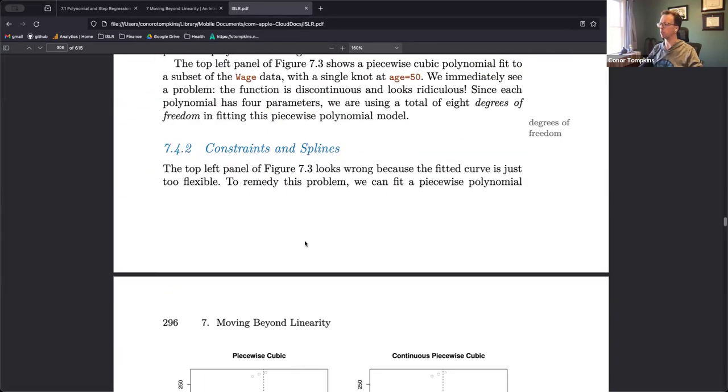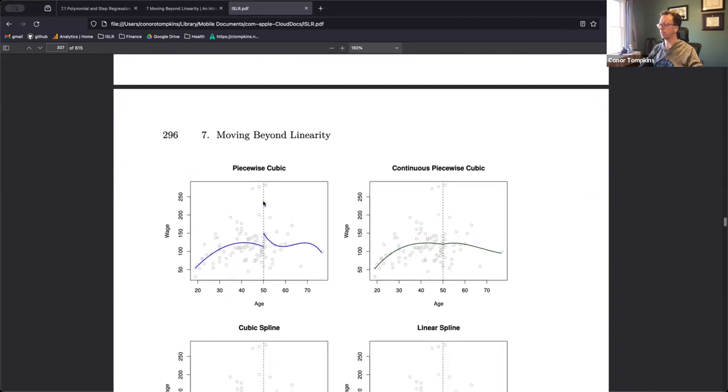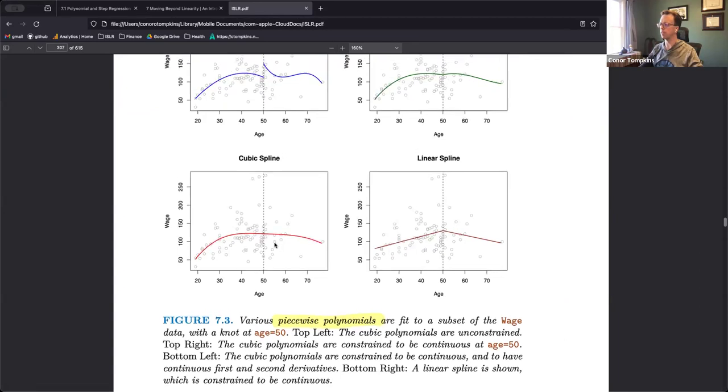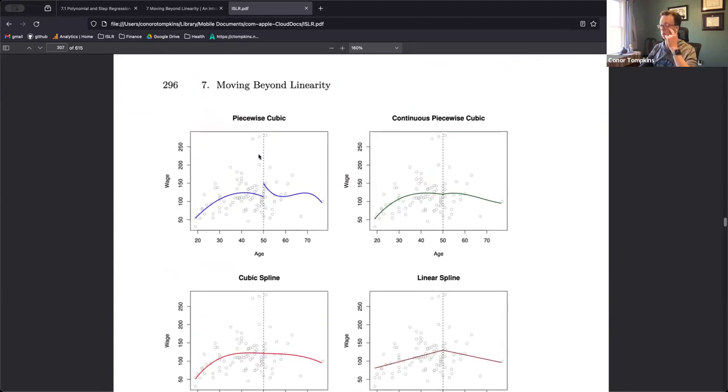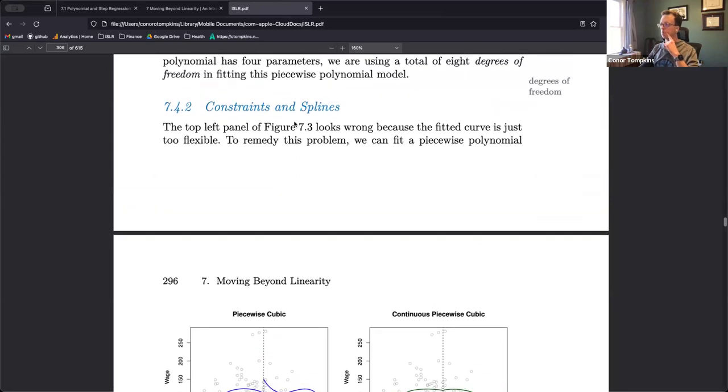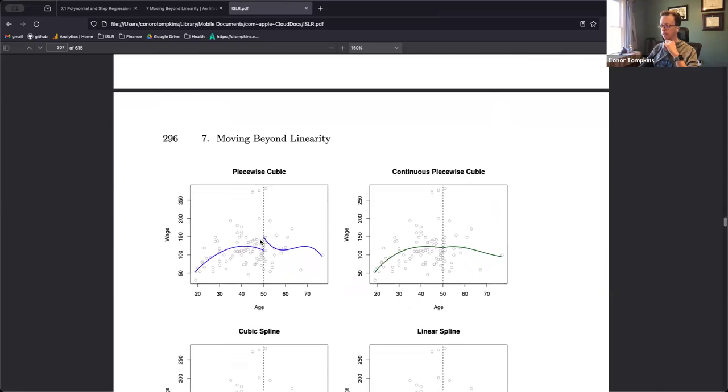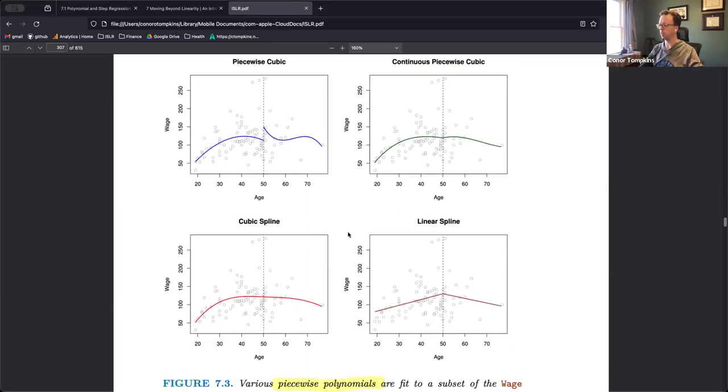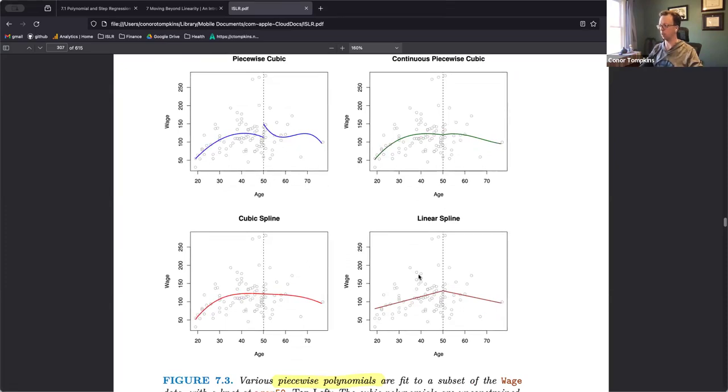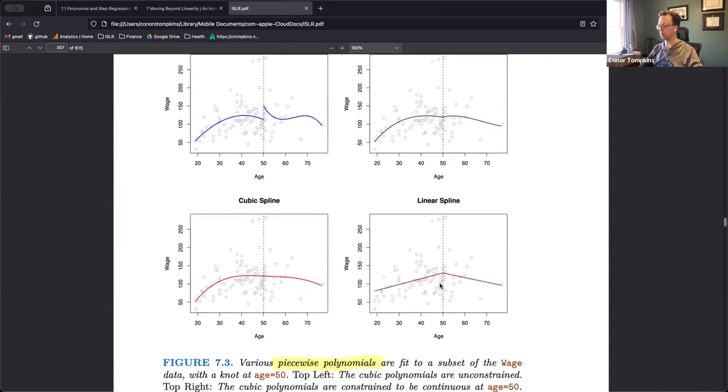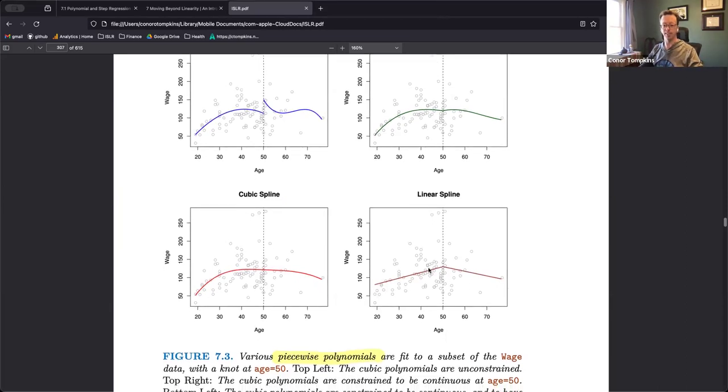In 7.3, yeah so here they show a couple different ways to do these methods. This is the piecewise cubic, obviously it's discontinuous there at 50, so those lines are not continuous. This one does a little bit better but there's still a V or U shape there. Cubic spline looks even better, and then linear is different.